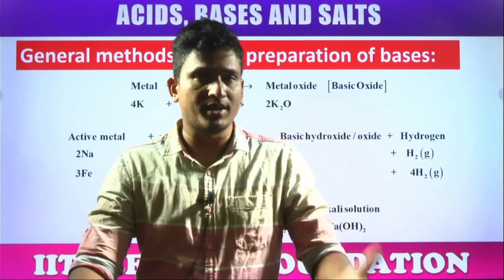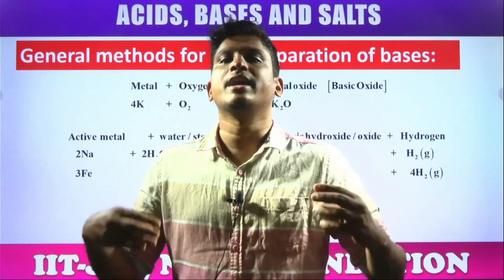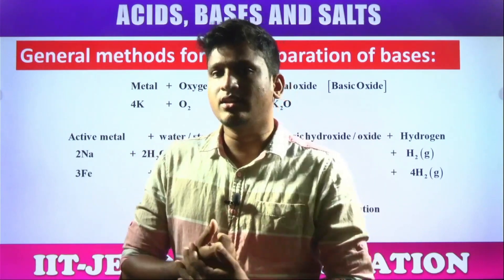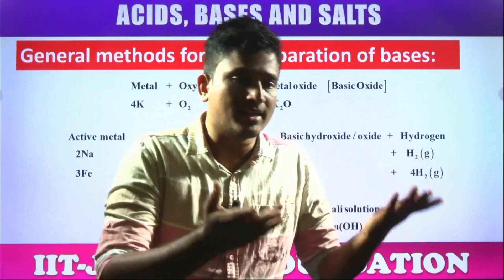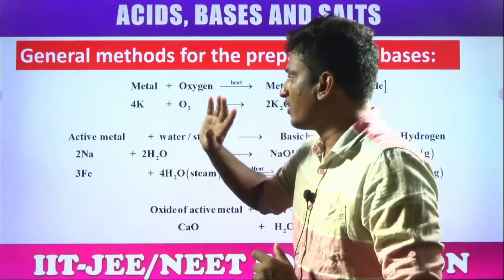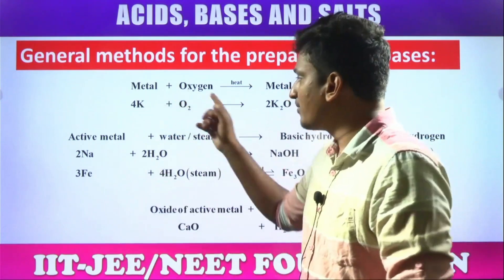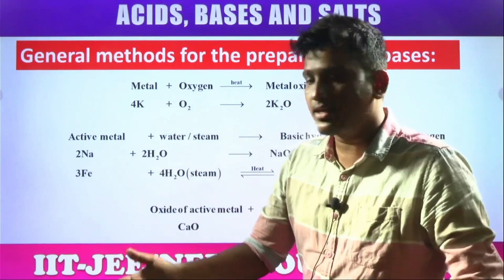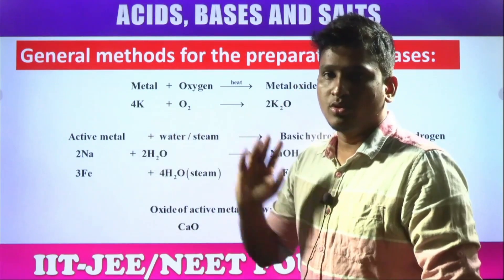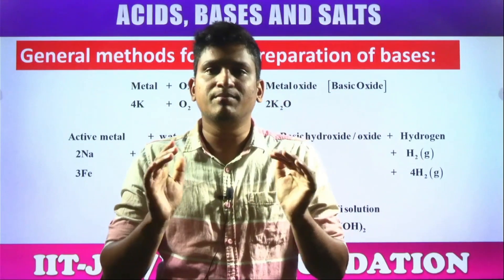General methods of preparation: how to synthesize a base? In general, bases are oxides or hydroxides of metals. When metals react with oxygen, we get metallic oxides. Potassium reacts with oxygen to give potassium oxide; sodium reacts with oxygen to give sodium oxide; magnesium reacts with oxygen — 2Mg + O₂ → 2MgO. All these metallic oxides are basic in nature.